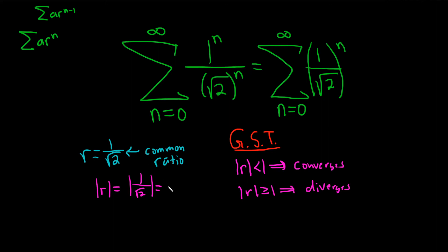This will be 0.707, the absolute value goes away. So that's less than 1, so converges by the geometric series test.